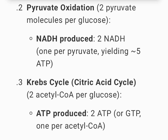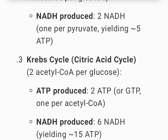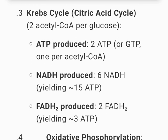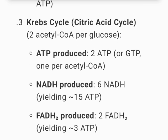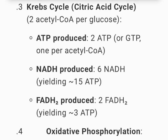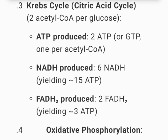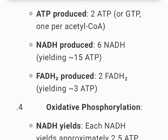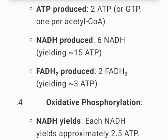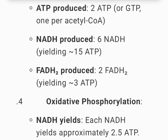3. Krebs cycle, also known as the citric acid cycle. 2 acetyl-CoA per glucose. ATP produced: 2 ATP, 1 per acetyl-CoA. NADH produced: 6 NADH, yielding 15 ATP. FADH2 produced: 2 FADH2, yielding 3 ATP.